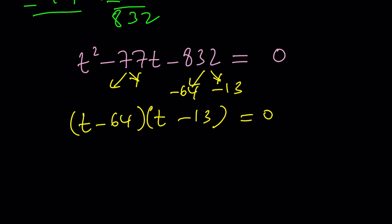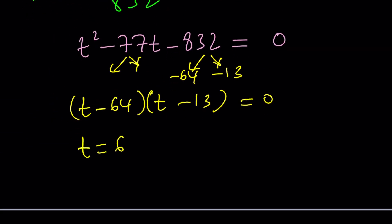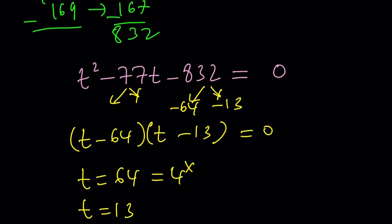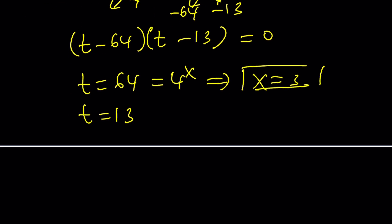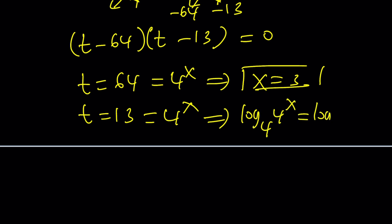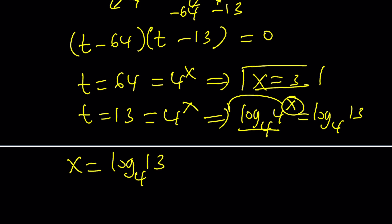From here, we get t equals 64 or t equals 13. Now, if t equals 64, which is 4 to the power x, then x equals 3 is a solution. If t equals 13, you must use logs. If we take log base 4 of both sides, the left side becomes x, and x would be log base 4 of 13. So there are potentially two answers.